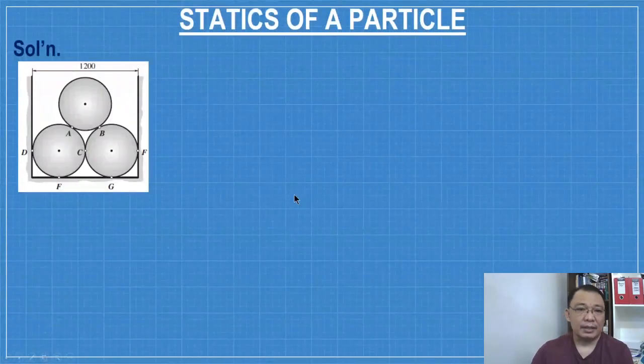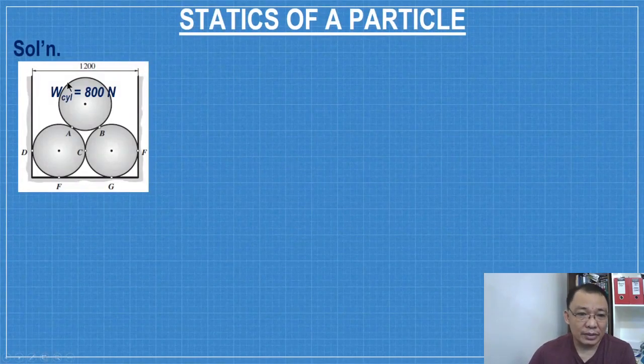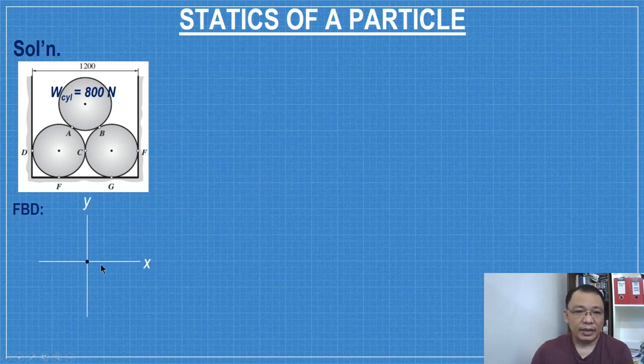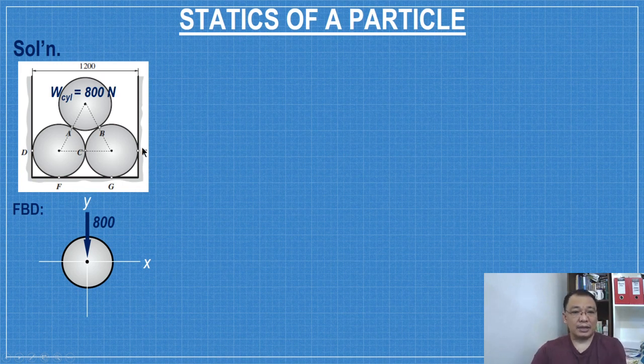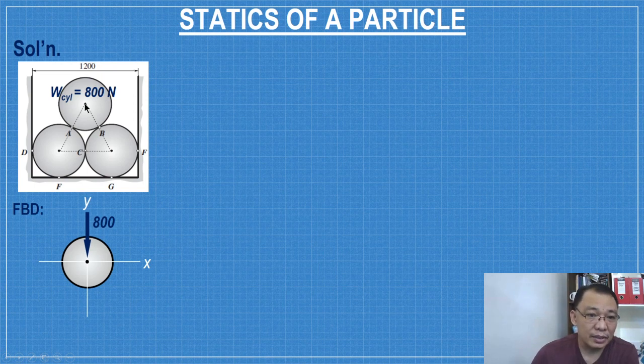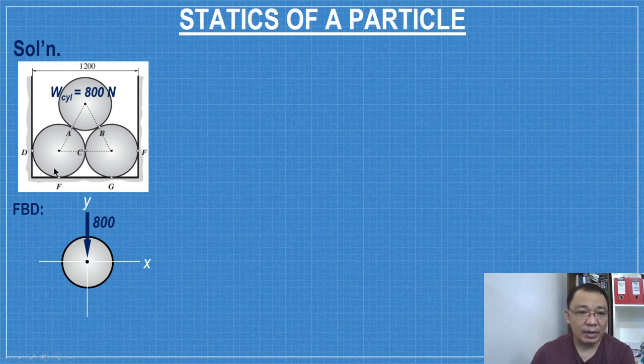You start at the top cylinder. The unknown forces are force A and force B, only two. If you start at the bottom cylinder, you have more than two unknown forces. If you connect the three centers, you notice that this is an equilateral triangle. The diameter is 600, so 300, 300. All sides are equal, therefore the angles are 60 degrees.